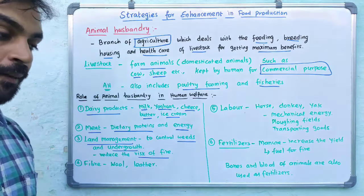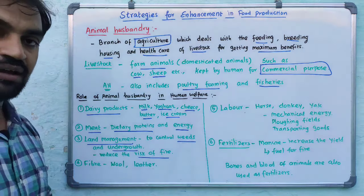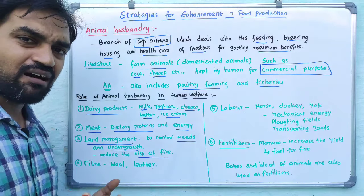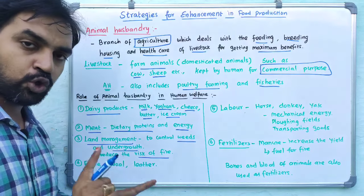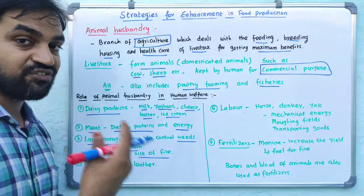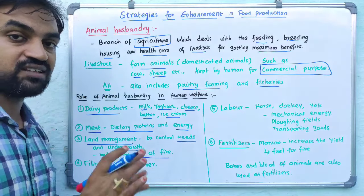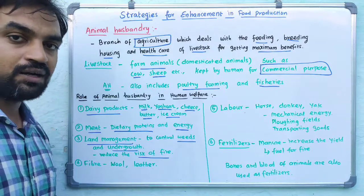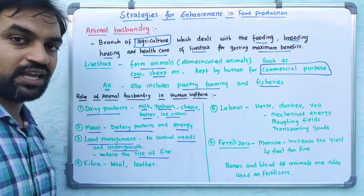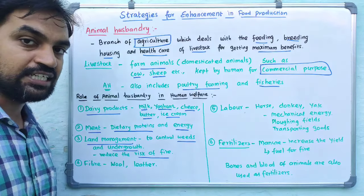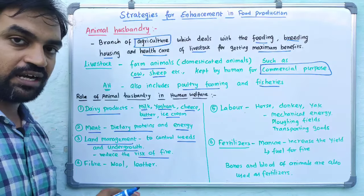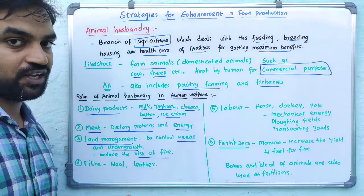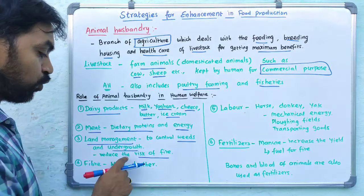Undergrowth — this wood is called shrubs. These shrubs, if left as a single mass of trees, are a major reason for forest fires. If you go to the woods, you can use animals to trim and clear this undergrowth, cutting the wood and preventing forest fires.